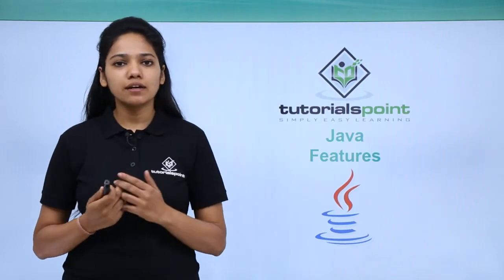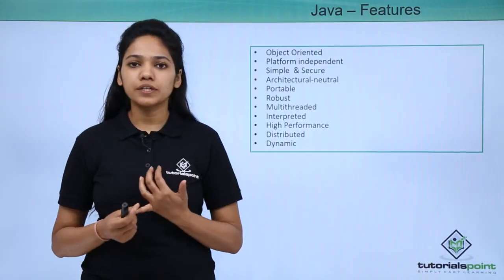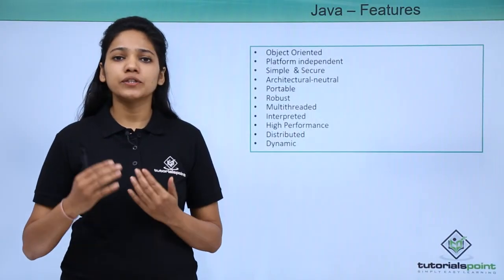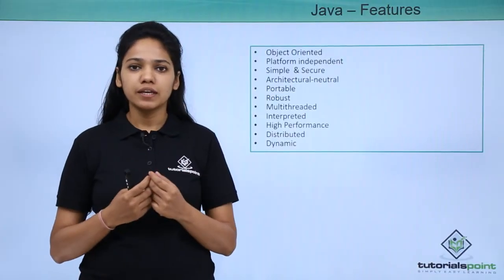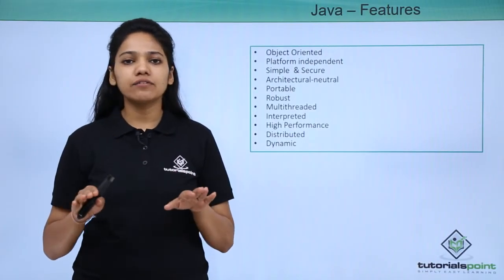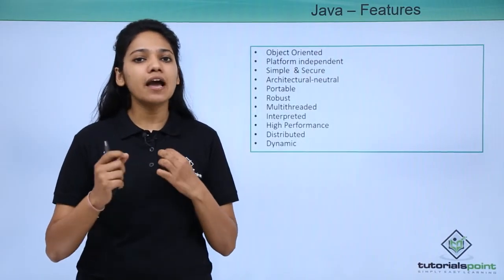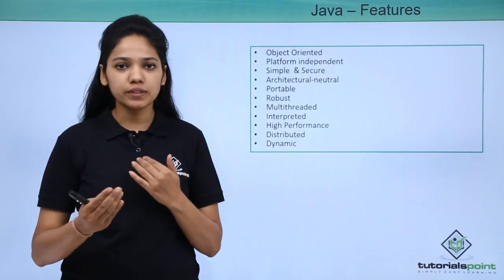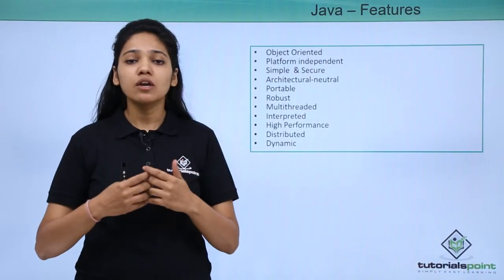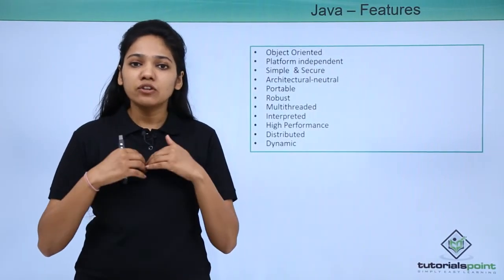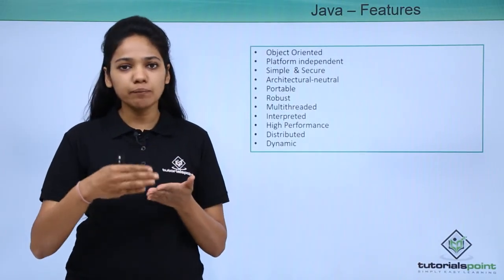Let us learn what are the Java features. The first one is object oriented. In Java, when you talk about the language, you need to understand what object oriented means. Java is nothing but a software where all the objects communicate with each other through data and behavior.